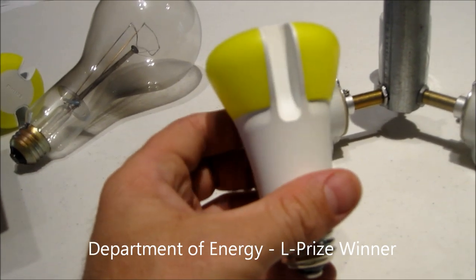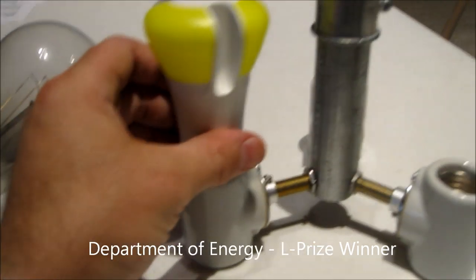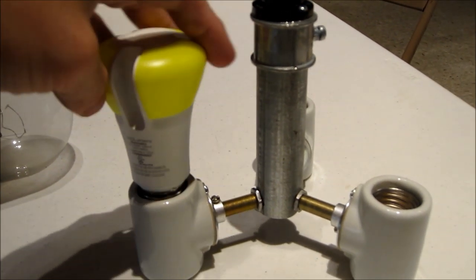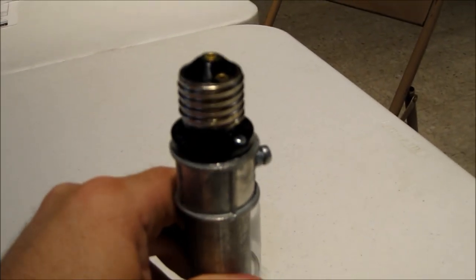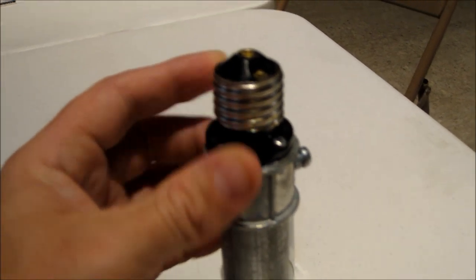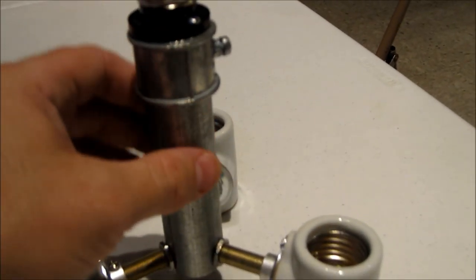We put these bulbs into this fixture by screwing in just like a normal socket. The basic components are: we have an adapter to go into the standard light socket, we have a shaft which is made out of metal and a coupling.